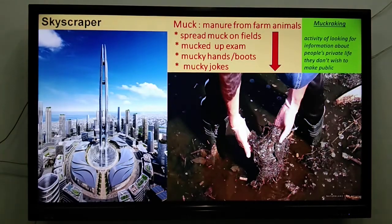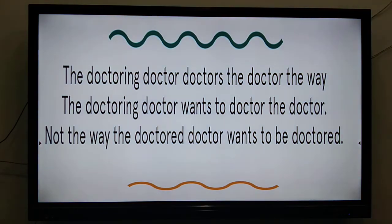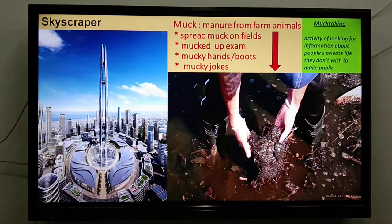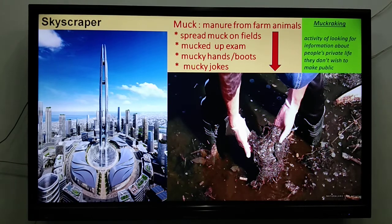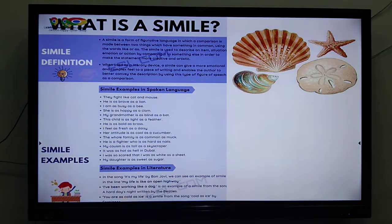Now let us look ahead to some vocabulary — skyscraper, muck (manure from farm animals), and muck-raking. We will come back to these. Now, similes. What is a simile? A simile is a form of figurative language.